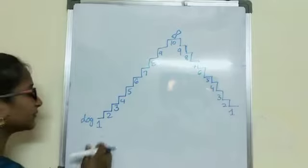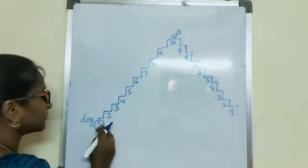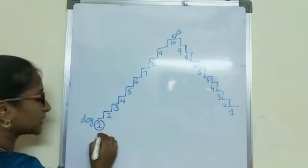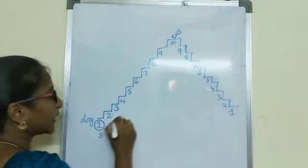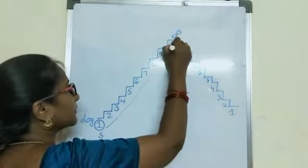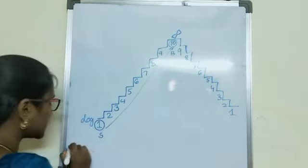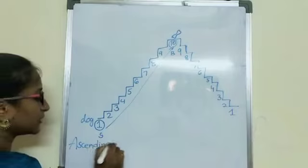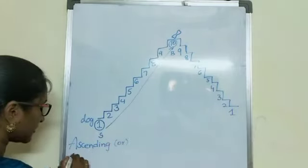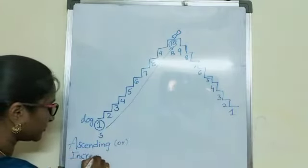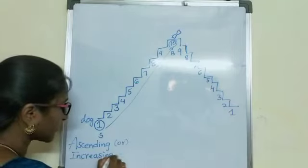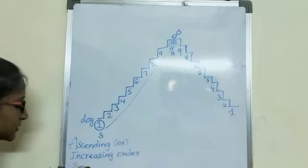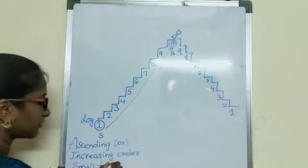The dog started from step 1. From step 1 to step 10 it went. That means it started at a smaller number and went to a bigger number. So, arranging numbers from smaller to bigger is called ascending order or increasing order.